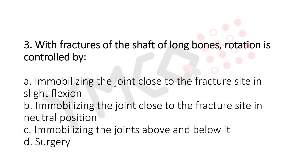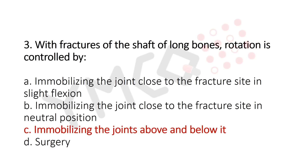Question 3: With fractures of the shaft of the long bones, rotation is controlled by — option A: mobilizing the joint close to the fracture site in slight flexion; option B: immobilizing the joint close to the fracture site in neutral position; option C: immobilizing the joints above and below it; option D: surgery. The answer is option C: immobilizing joints above and below it.